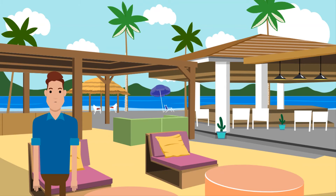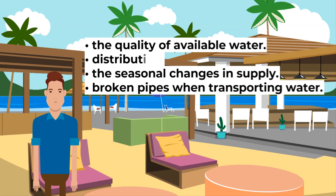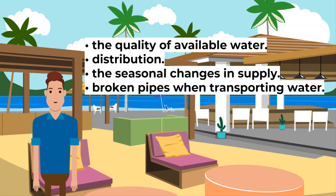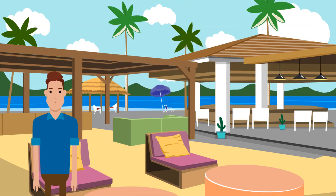Let's look at water management. There are problems in supplying water in more economically developed countries. These include the quality of available water, distribution, the seasonal changes in supply, and broken pipes when transporting water. Both water supply and the demand for water need to be managed.